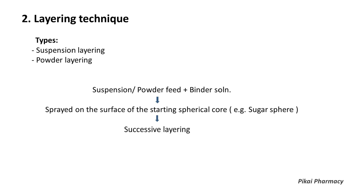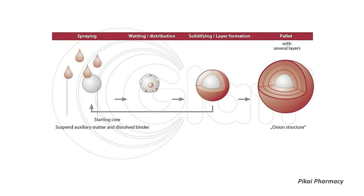Successive layering is performed only in powder layering technique. In this step, successive powder layers are deposited over the spherical core with the help of a bridging liquid. After this, a drying phase common to both layering techniques takes place, and solid spherical pellets are formed. A schematic picture illustrates the whole layering technique in a stepwise manner.